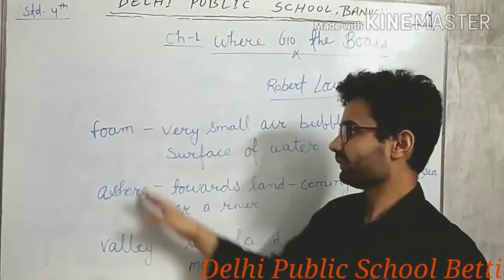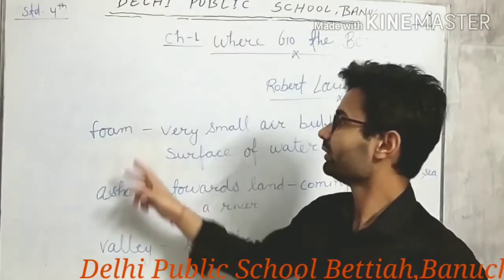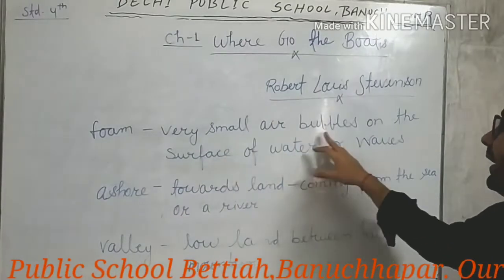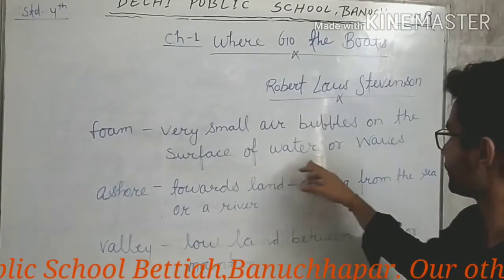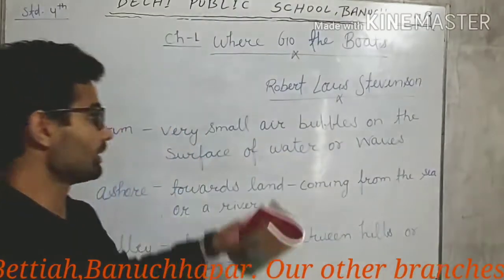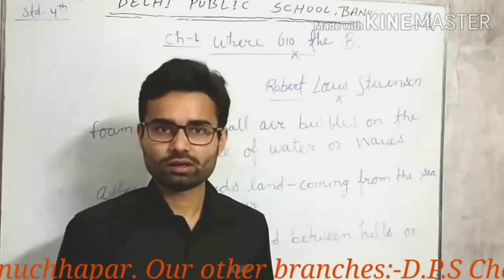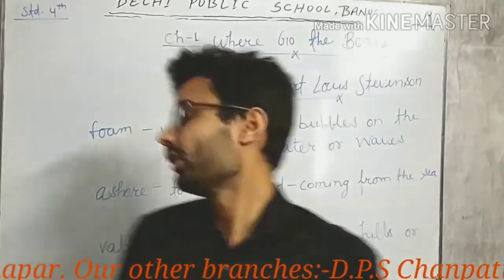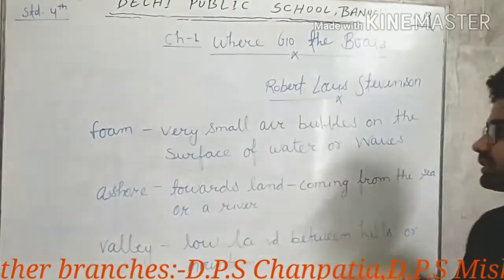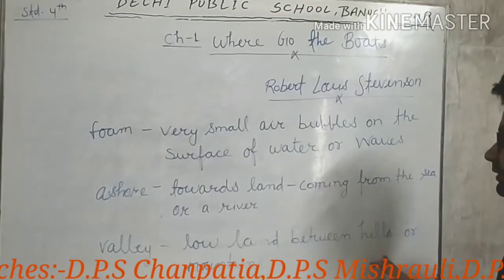Now, in this poem, these three words may create some difficulties for you. The first is 'foam' — foam means very small air bubbles on the surface of water or a lake. You have come across this situation where you see the bubbles, 'bulbula' you can say in Hindi. Then, 'ashore' — towards land means something coming from the sea or a river. And third, 'valley' — low land between hills or mountains.